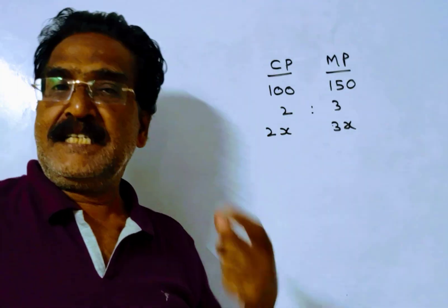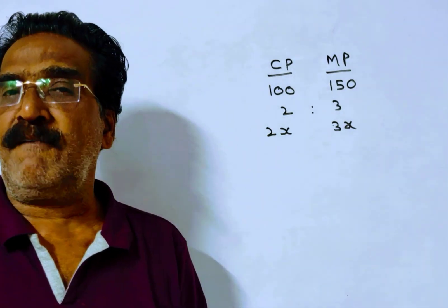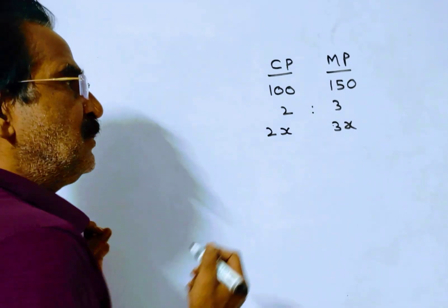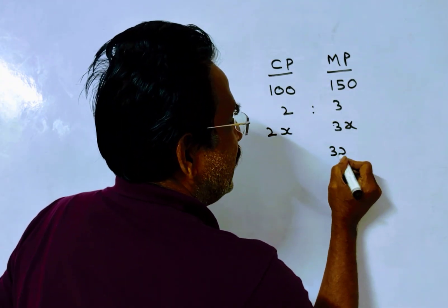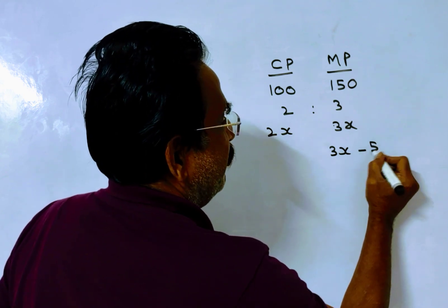This is sold at a discount of 50 rupees, so the selling price becomes 3x minus 50.